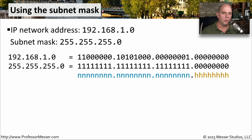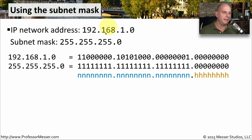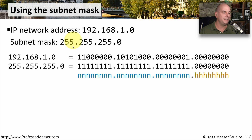Let's now break down what an IP address really is. As you may recall, an IP address consists of two parts: a network address and a host address. To be able to separate those two things, you not only need the IP address but also the subnet mask. So if we take the example of 192.168.1.0, that's our network address, and the subnet mask assigned to this network is 255.255.255.0. We'll write out both the network address and the subnet mask in binary.